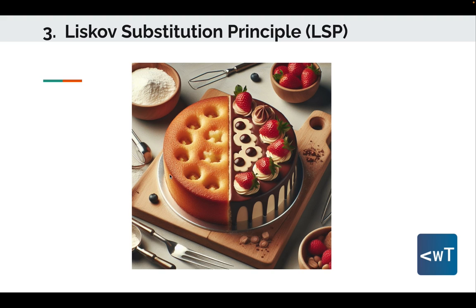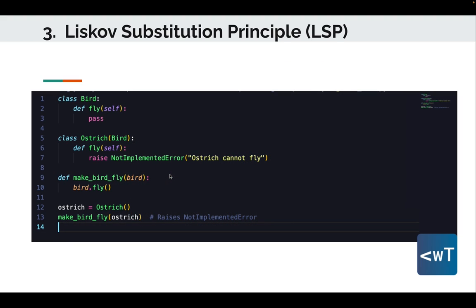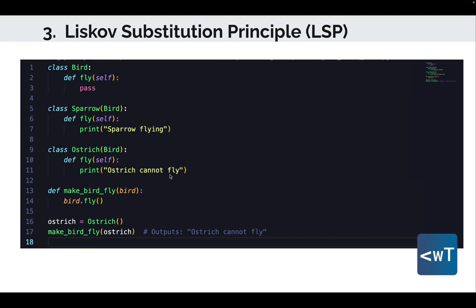Let's see an example of code that violates this principle. In this example, although Ostrich is a subclass of Bird, it cannot fly, violating LSP. After refactoring, we've ensured that Ostrich provides a valid implementation of the fly method, adhering to the LSP, allowing objects of Ostrich to be used interchangeably with objects of Bird without affecting the correctness of the program.